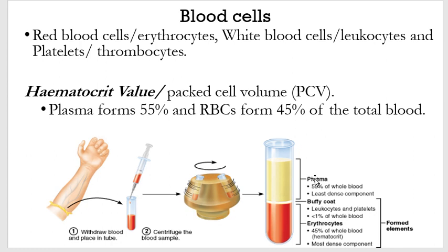So if we look at the other component of packed cell volume, we have leukocytes and platelets that are after the plasma. The most heavy component — 45% of whole blood — is the hematocytes, which is the most dense, meaning the red blood cells. In between, we find white blood cells and platelets, and then at the bottom we find the red blood cells. This is to appreciate the components of the blood.